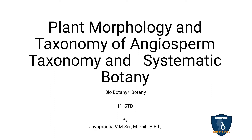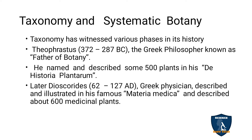I am going to discuss taxonomy and systematic botany in plant morphology and taxonomy of angiosperm. Taxonomy is the classification, identifying, and naming of organisms. It is a branch of botany or zoology, and it has witnessed various phases in its history.